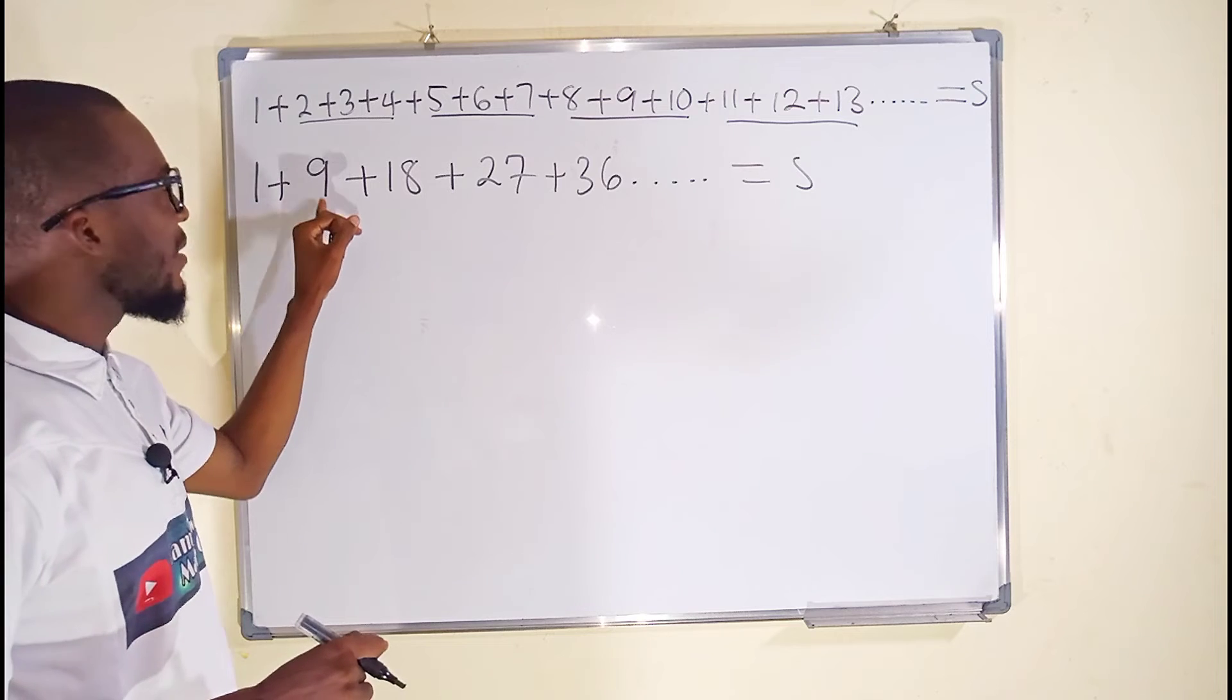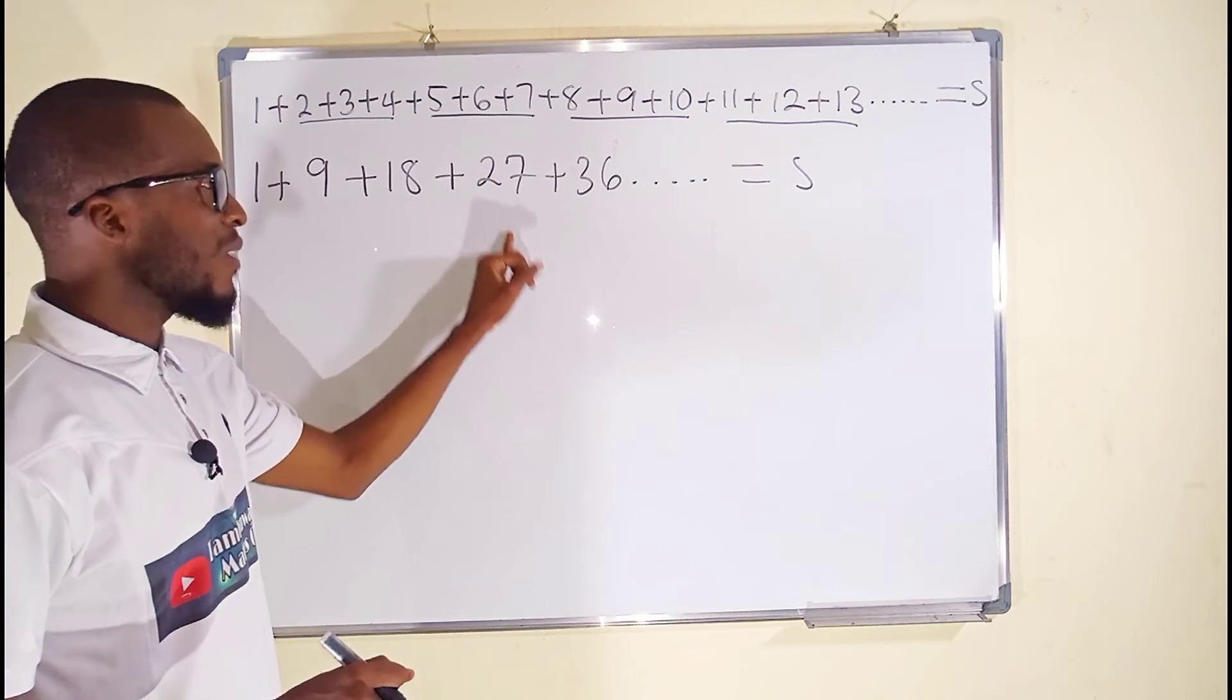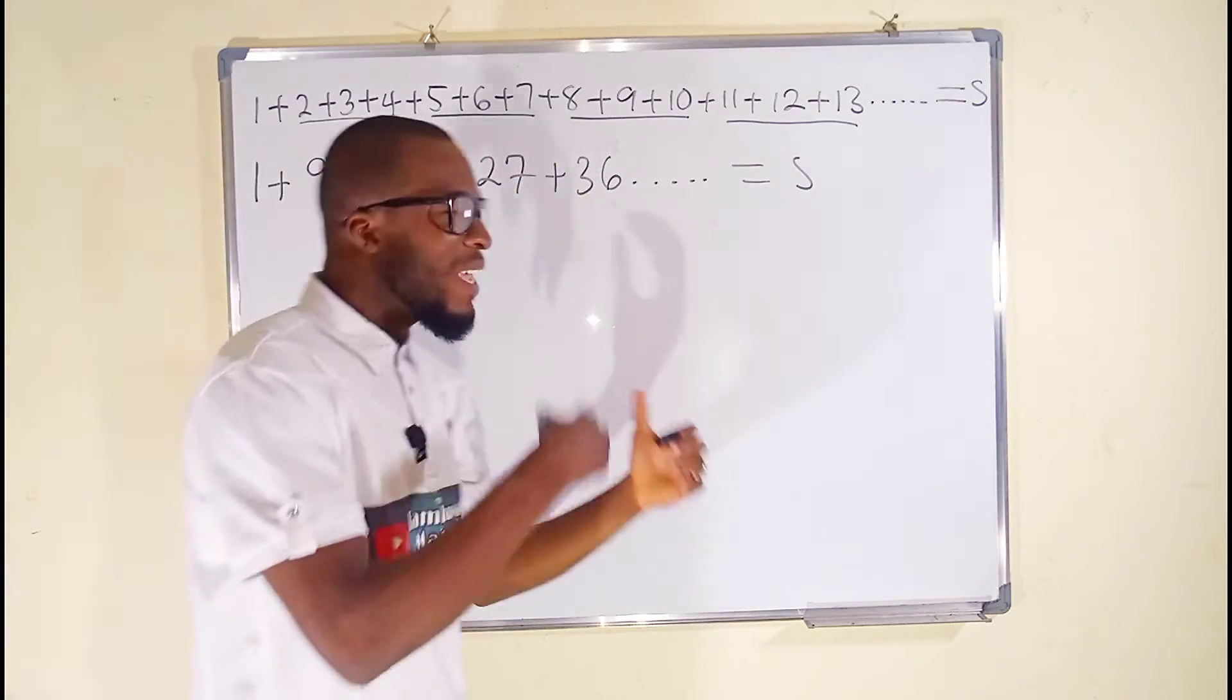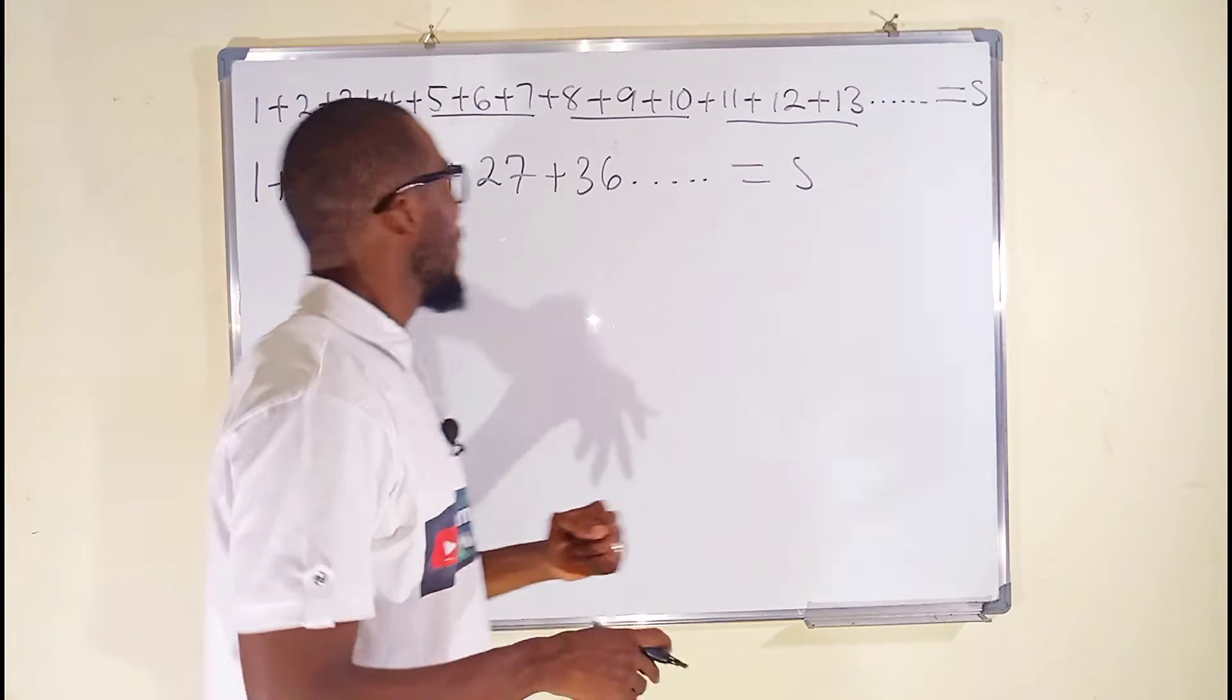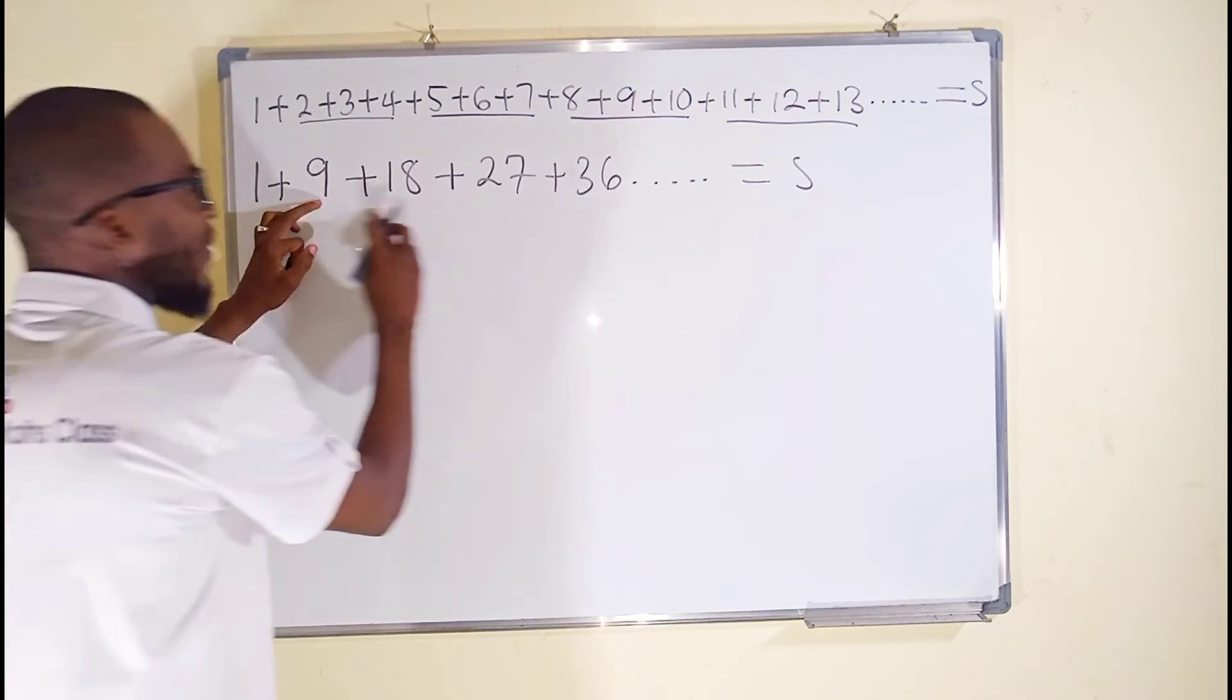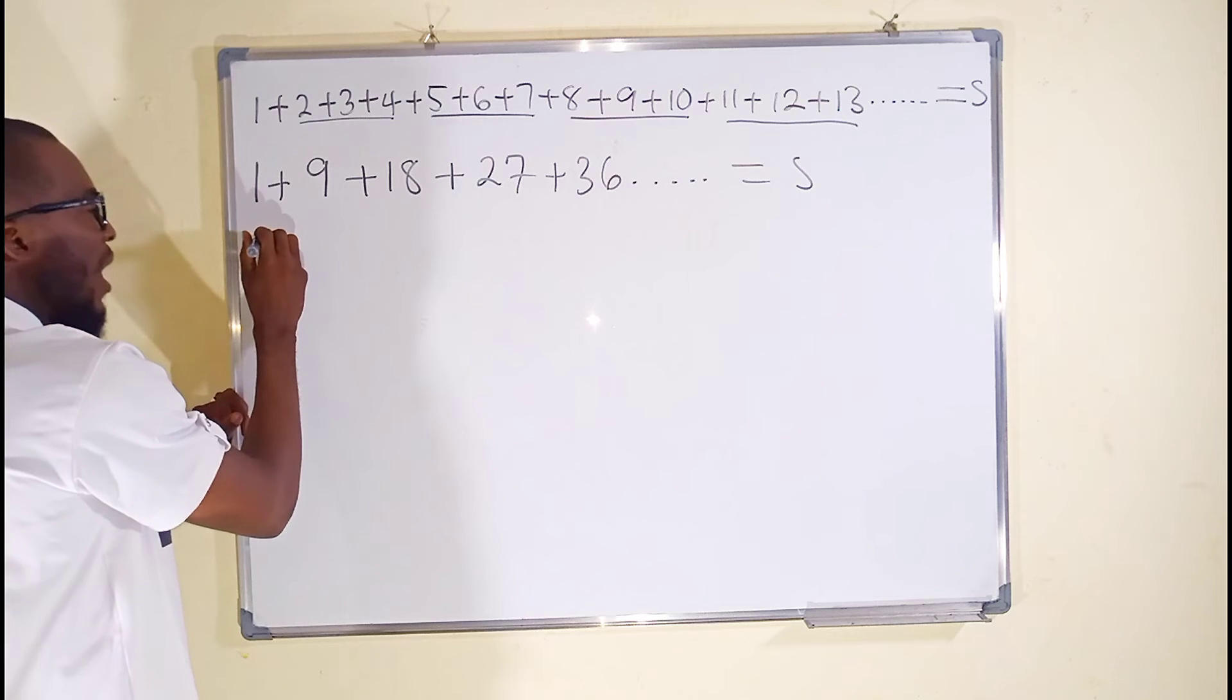9 times 1 is 9. 9 times 2 is 18. 9 times 3 is 27. And 9 times 4 is 36. So we are going to be getting multiples of 9, 9 up to infinity. So since this is true, we can now factor 9 out since 9 can divide all these numbers. In that order.